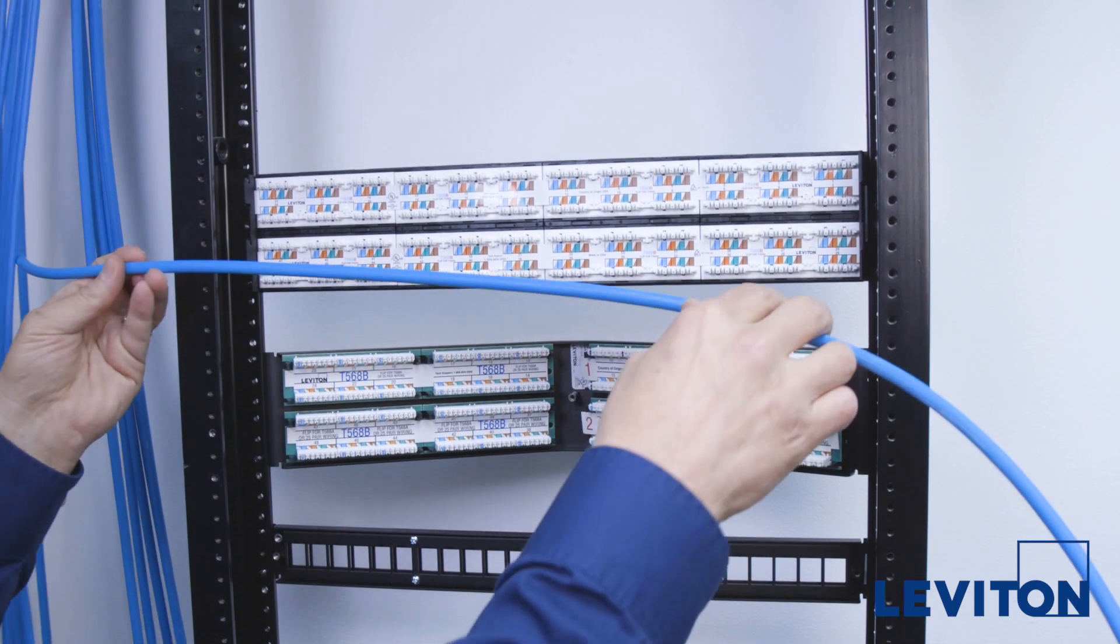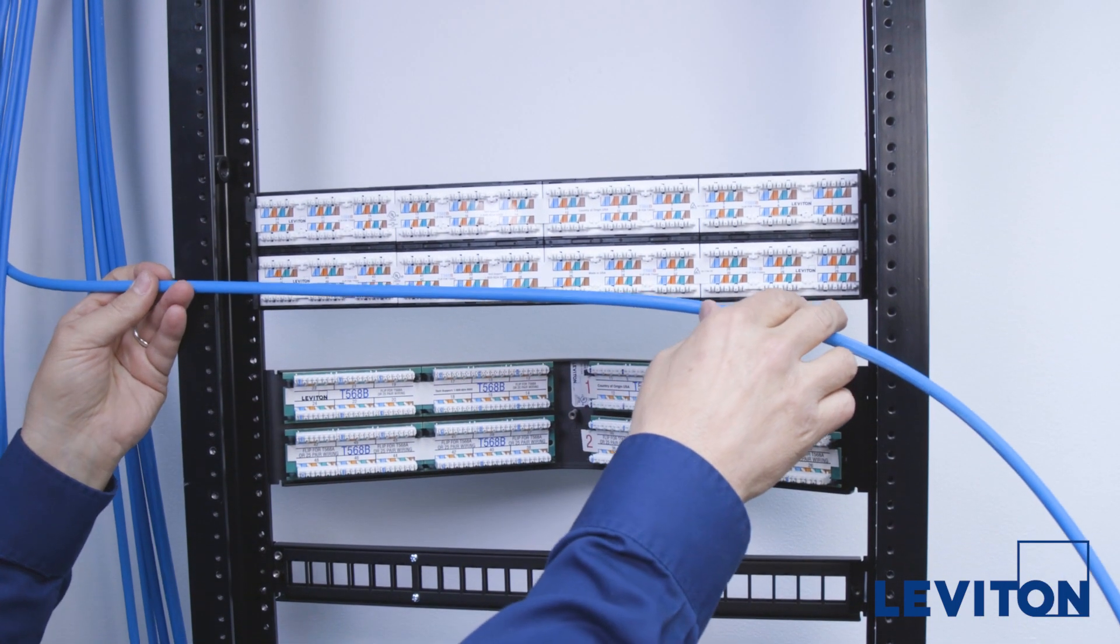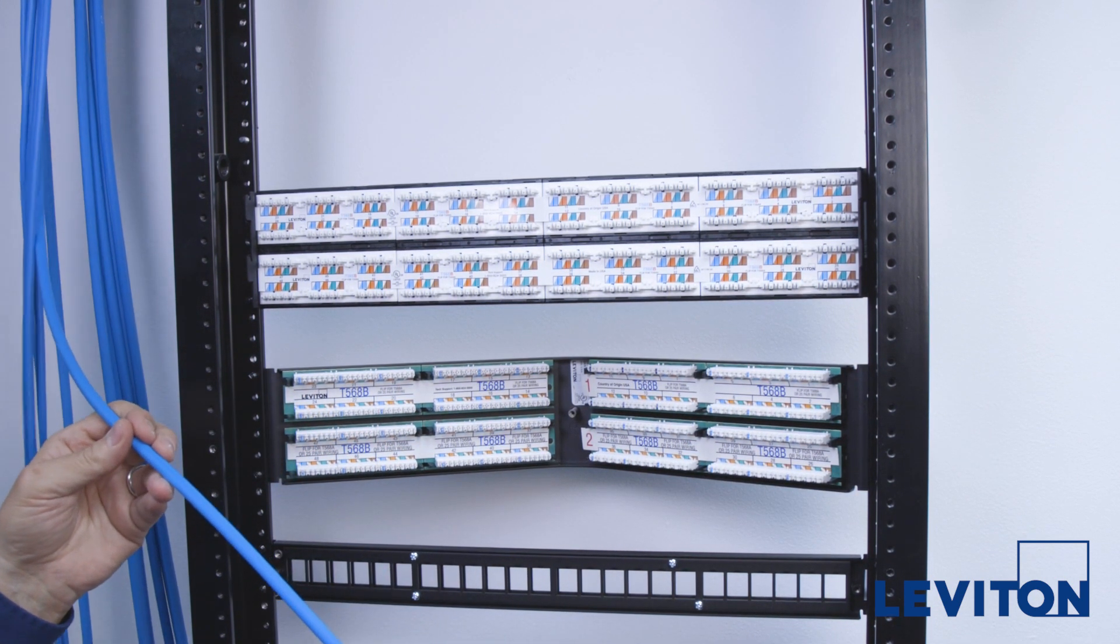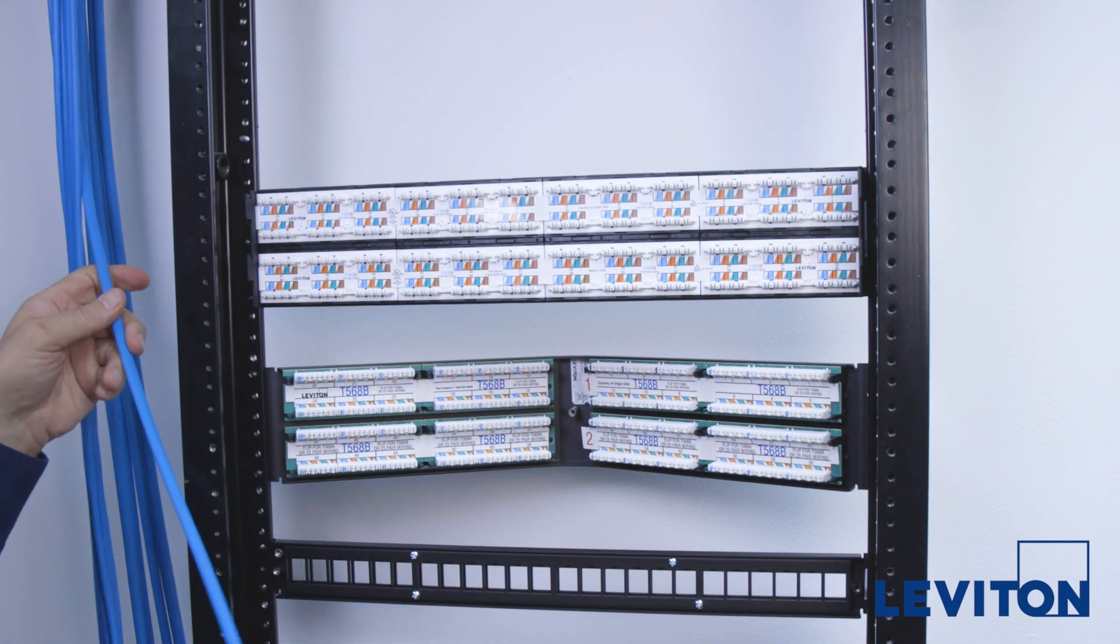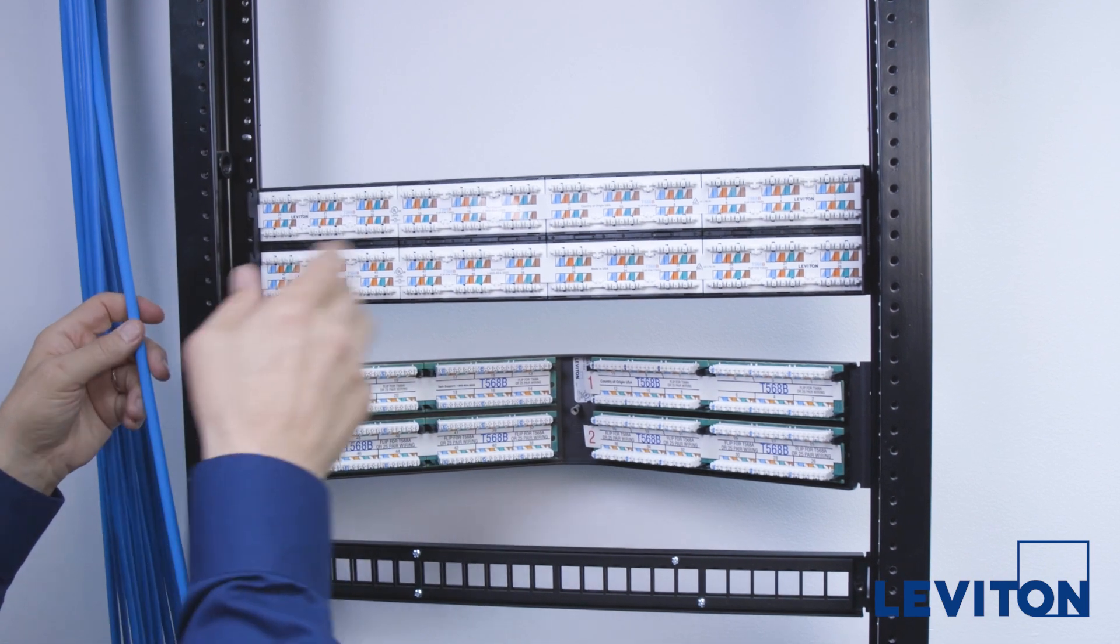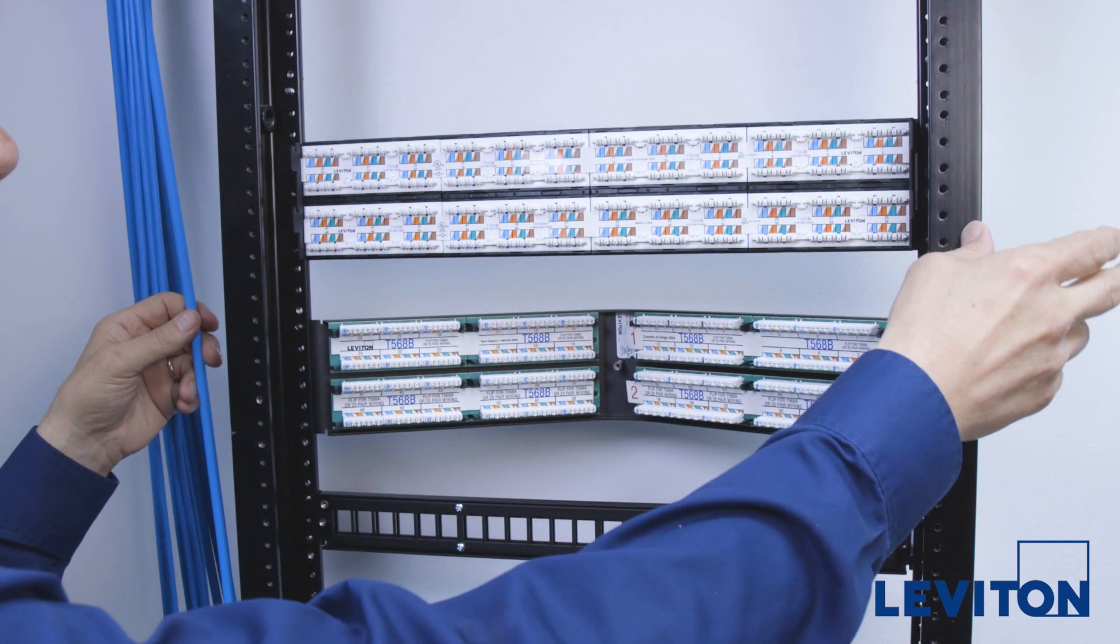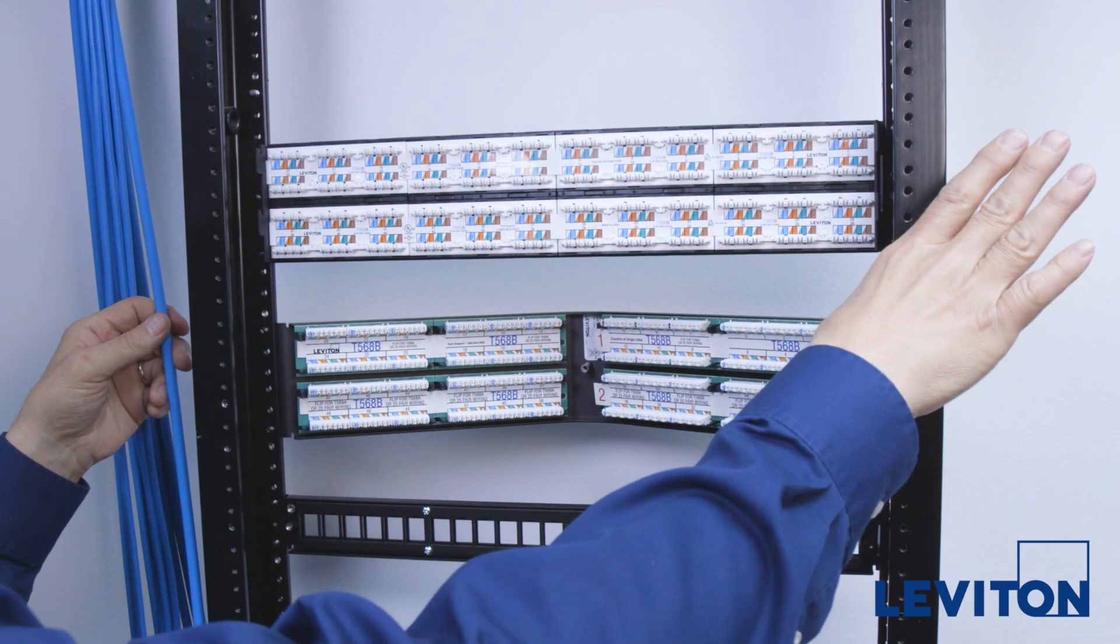Due to the larger size of Category 6A cables, you cannot run wiring from a single side of the rack. Instead, terminate the cable running down the left-hand side of the rack from the center of the patch panel out toward the left, and the cabling running down the right-hand side of the rack from the center out toward the right.